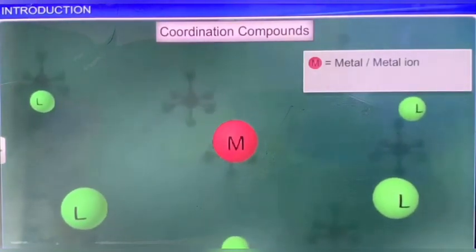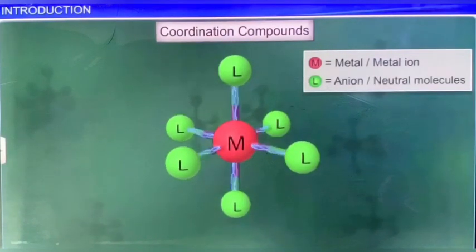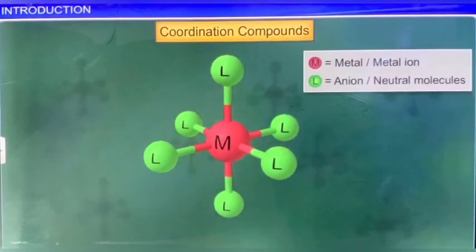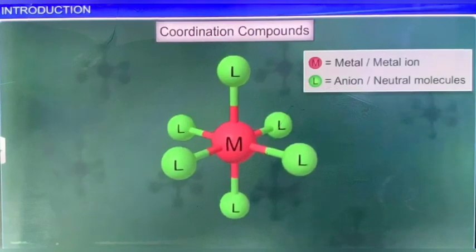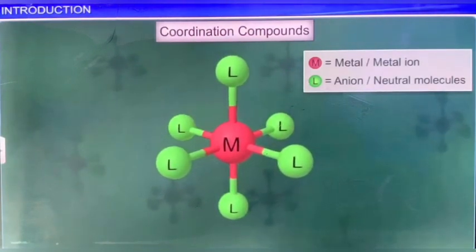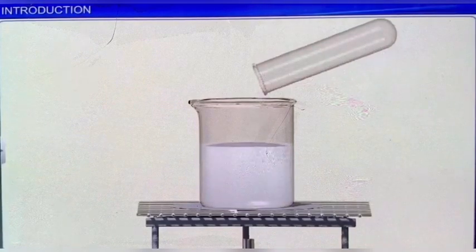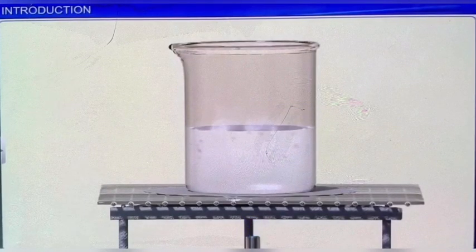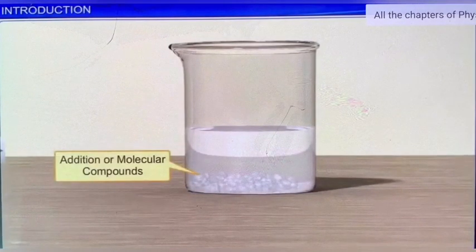Coordination compounds are a special class of compounds in which the metal atoms or ions are bound to a number of anions or neutral molecules. In modern terminology, these compounds are called coordination compounds. Coordination compounds or complex compounds are a type of addition compounds. When two or more stable compounds are allowed to combine in stoichiometric ratios, crystalline compounds are formed. These are known as addition or molecular compounds.